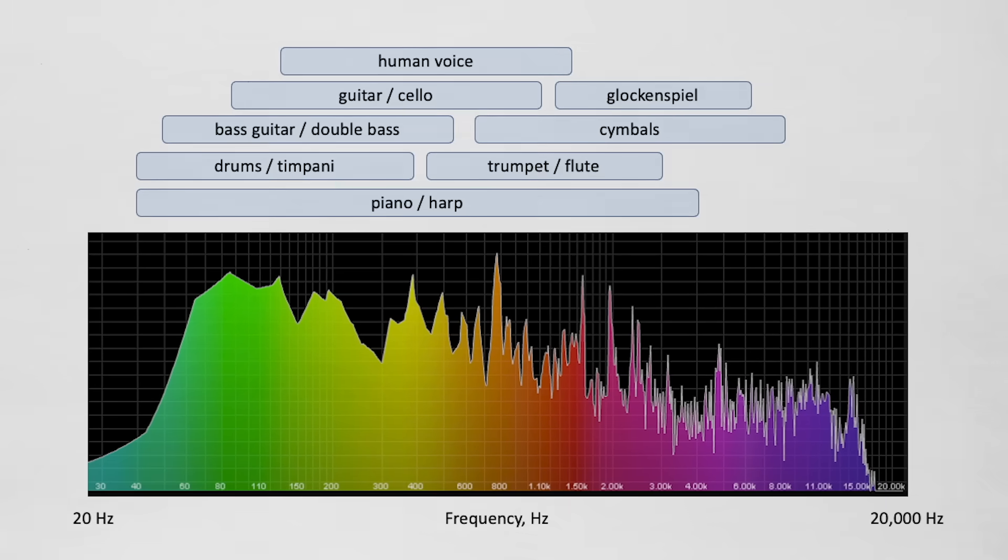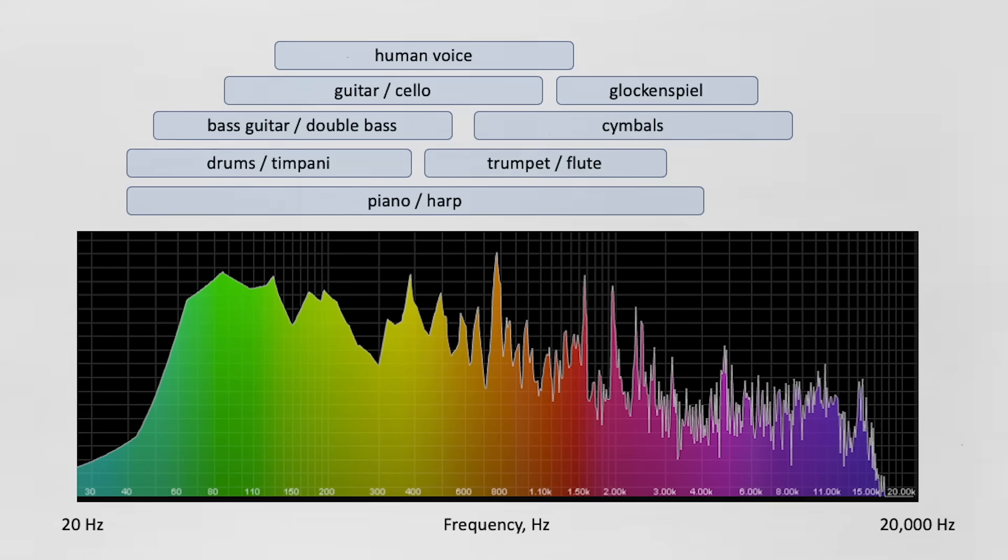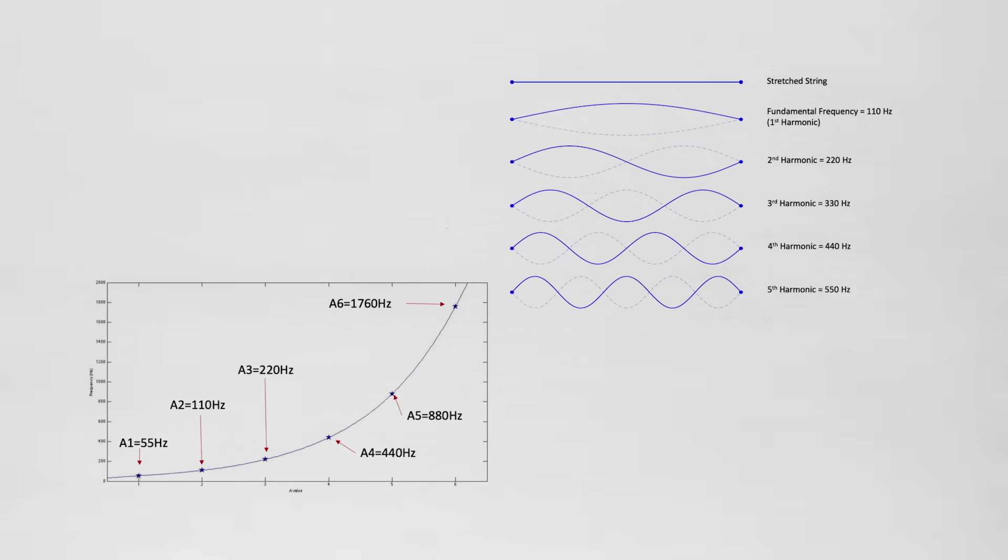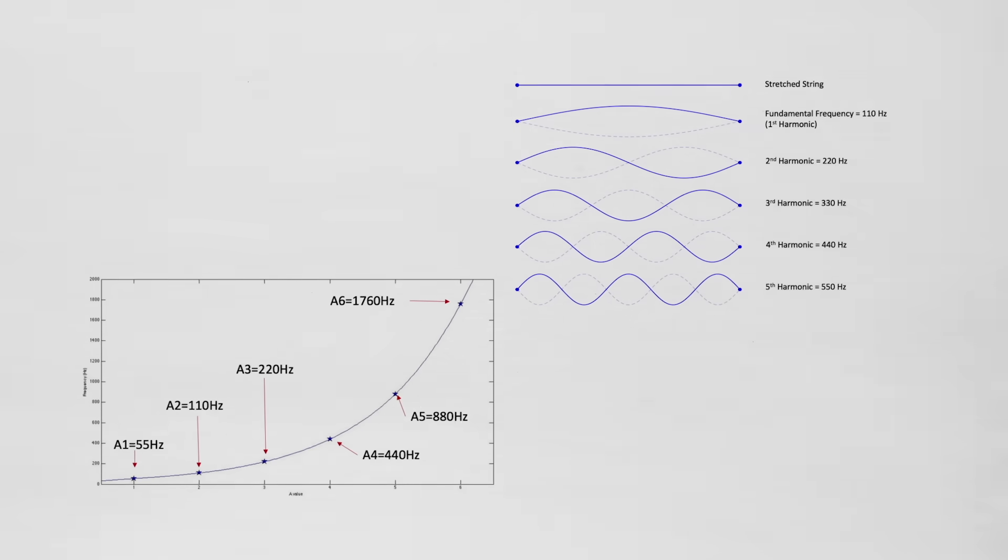When we listen to music, we experience a symphony of different frequencies and harmonies. Each musical note corresponds to a specific frequency and wavelength, creating a complex tapestry of sound.